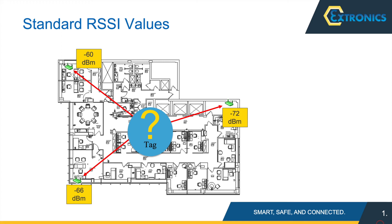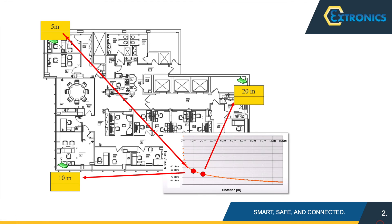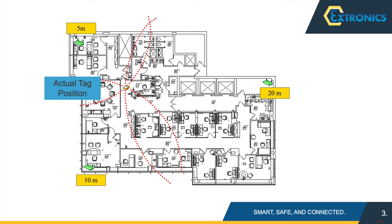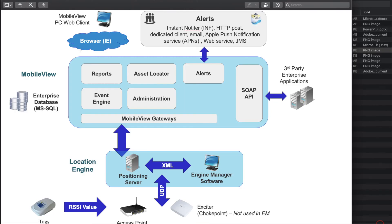Now let's look at how tags actually work — how the system figures out where a tag is in an environment. Looking at the schematic, you can see an AP about five meters away, another showing an RSSI value of about 20 meters, and a third at about 10 meters. The system builds arcs from each AP, and where those arcs intersect, that identifies the physical tag position. One arc at five, one at twenty, one at ten — their intersection gives you the tag location.